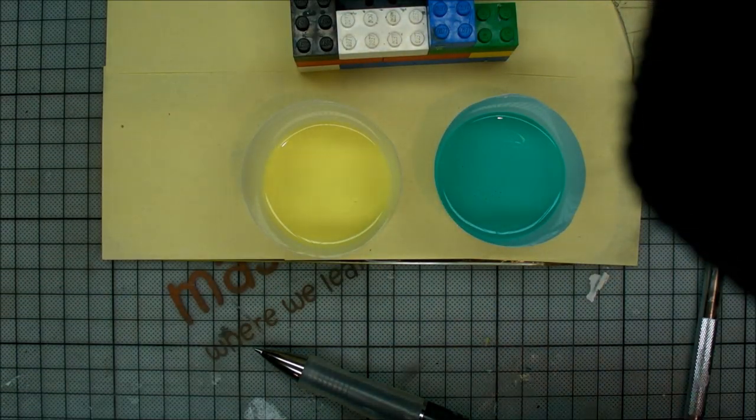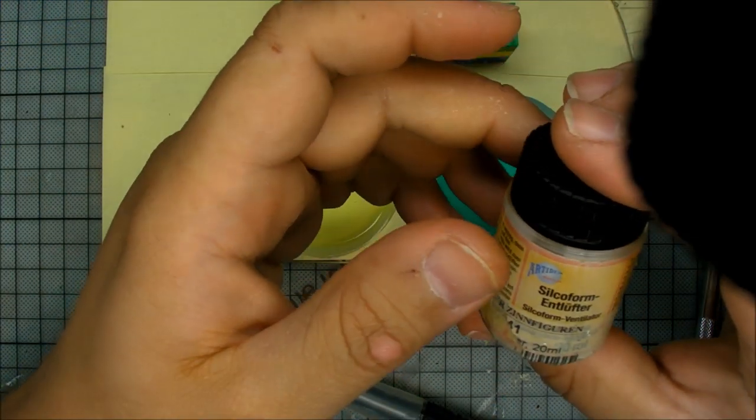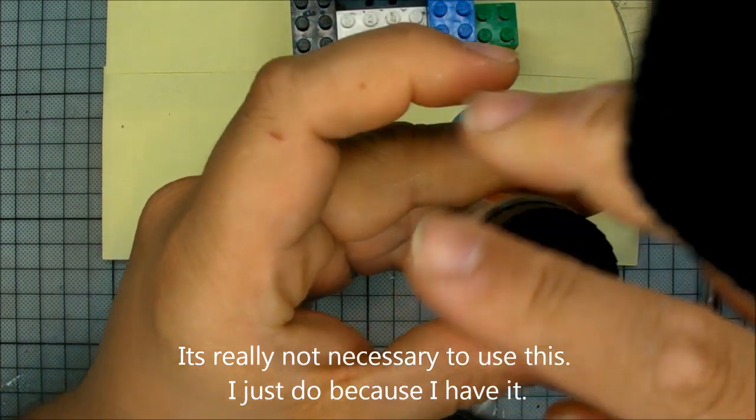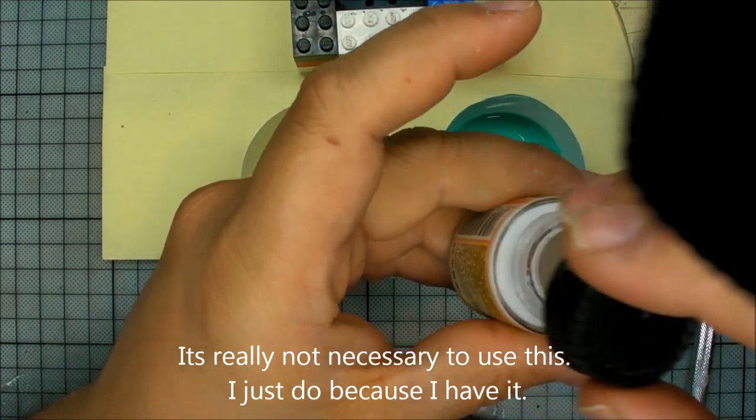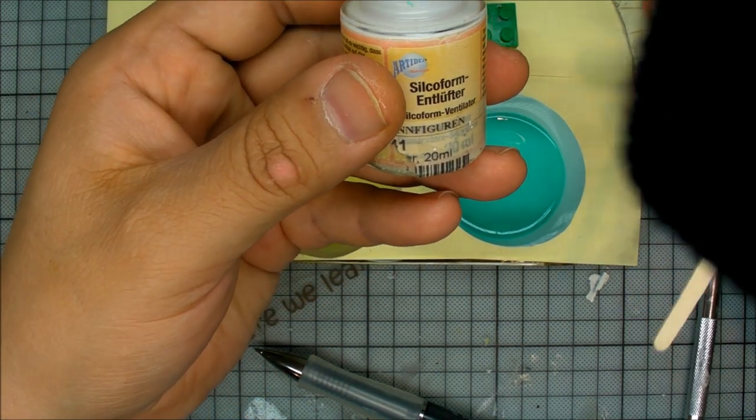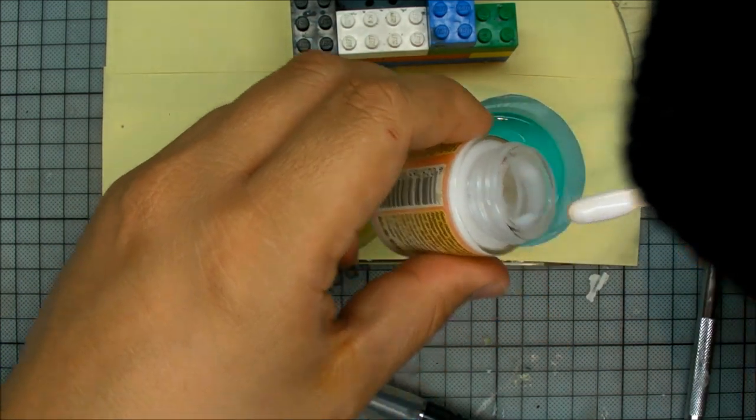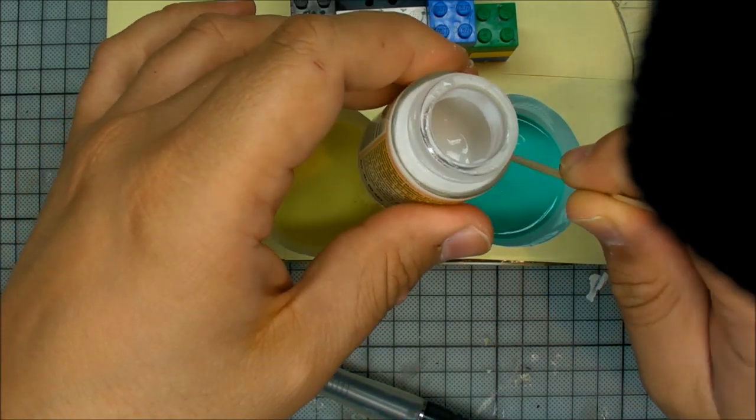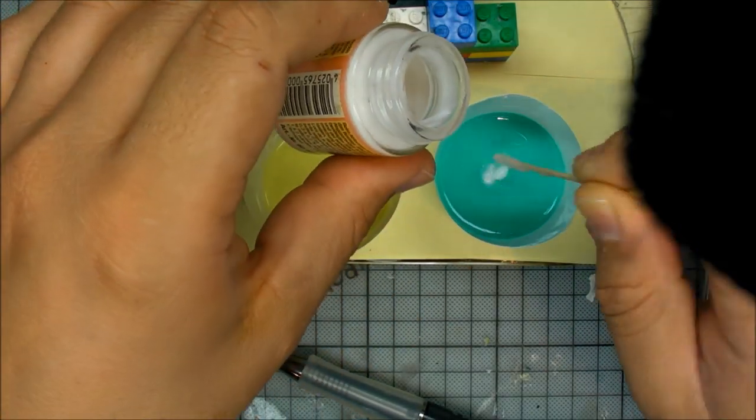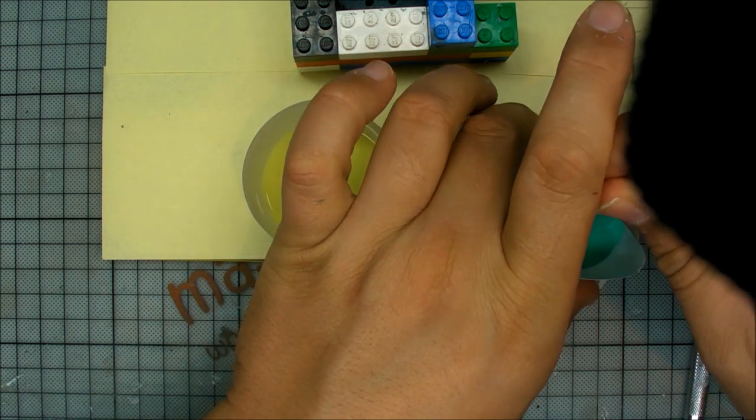All right, now we have an equal volume. It's still going to be a little too much I think, but we'll see. So now I'm just going to use this ventilation. I don't even know what it is. It's kind of like cream of some sort. This will actually make sure that the air bubbles will escape the silicone later easier. I have absolutely no idea how much I should be using of this, so I'm just going to put some good amount in here, something like this, and put it into one component first and then stir it real well.